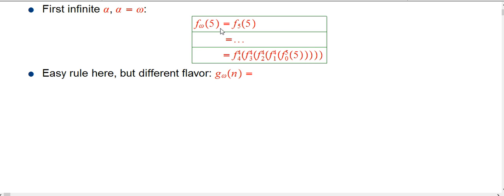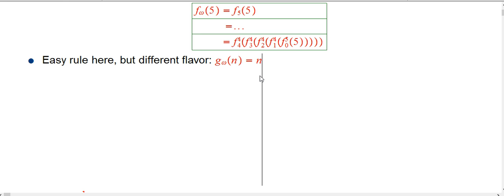So the first infinite α, let's look at α equals ω. F sub ω of, let's just be different, how about a five? Well, this is where something new is happening. By definition, the five is showing up in this slot. Because the definition of F ω was, you use the n to figure out which function you use to evaluate that.